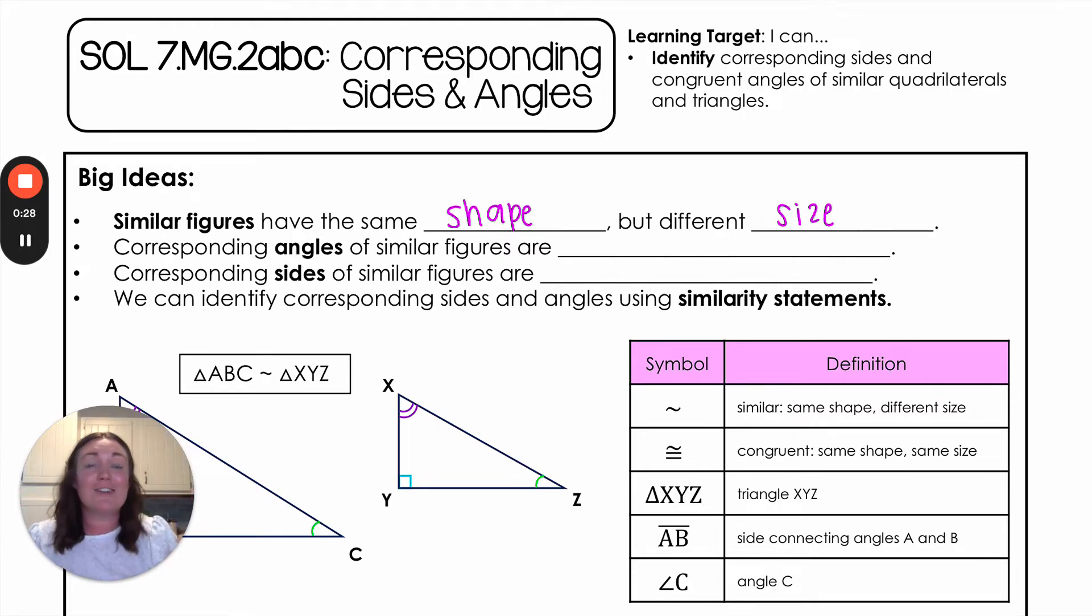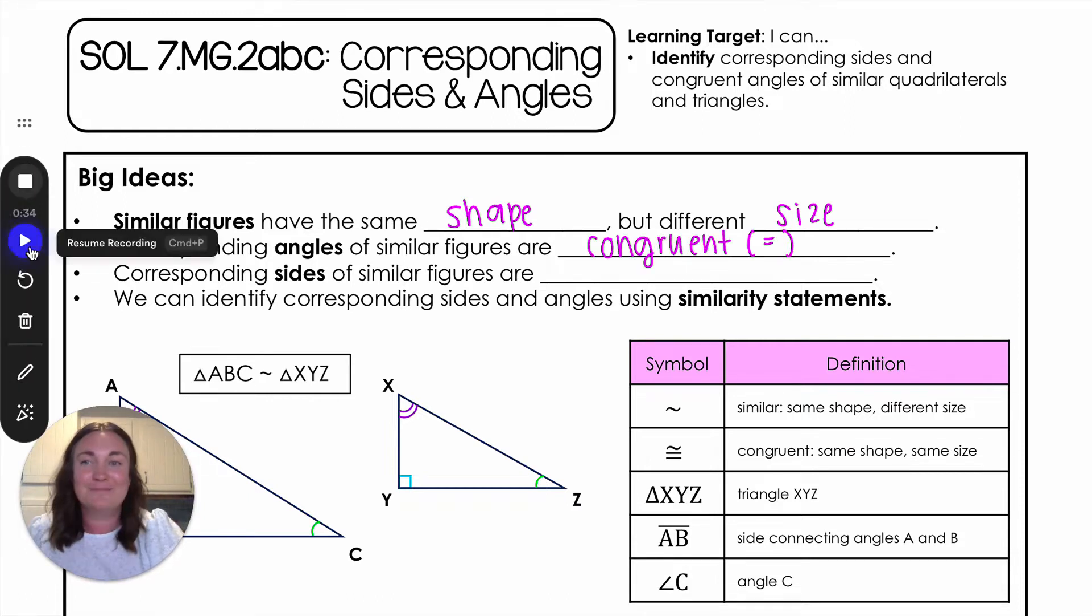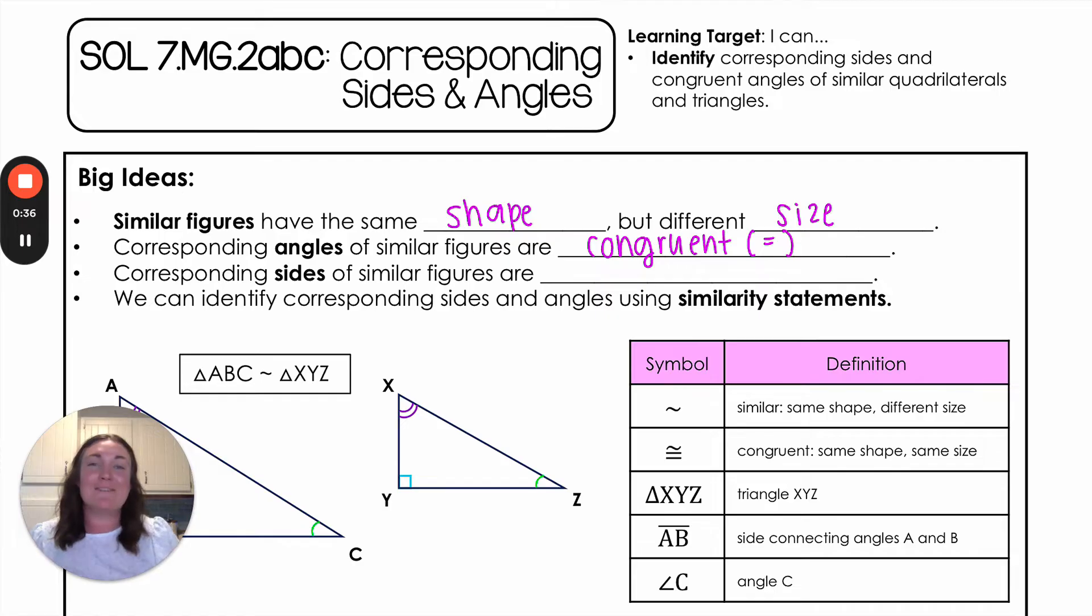When we have similar figures, their corresponding angles, or the angles that go together, are always going to be congruent, which is just a fancy way to say equal. Our corresponding sides of similar figures are going to be proportional. This is what makes them look like the exact same shape because you're changing everything at the same rate.